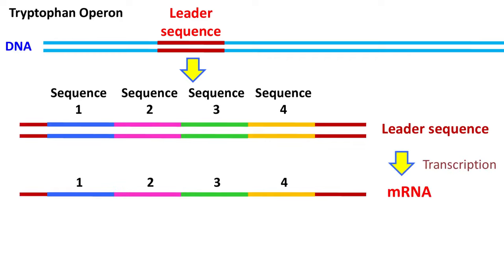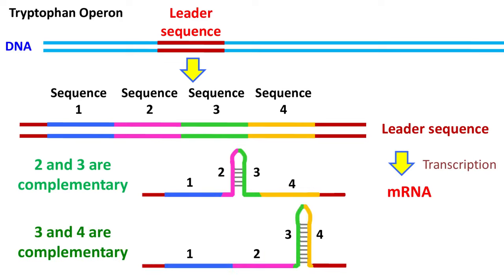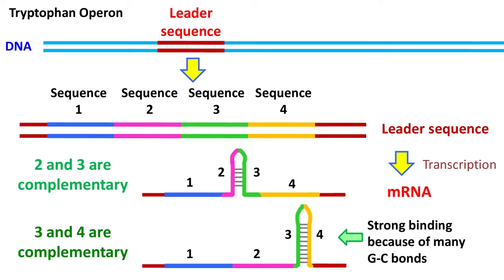When the mRNA is formed, sequence 2 and 3 have complementary bases which results in formation of a loop-like structure. Sequence 3 and sequence 4 also have complementary bases which can result in formation of a loop-like structure. The binding between sequence 3 and sequence 4 is very strong due to the presence of many GC bonds, whereas the loop formed between sequence 2 and 3 has few GC bonds.